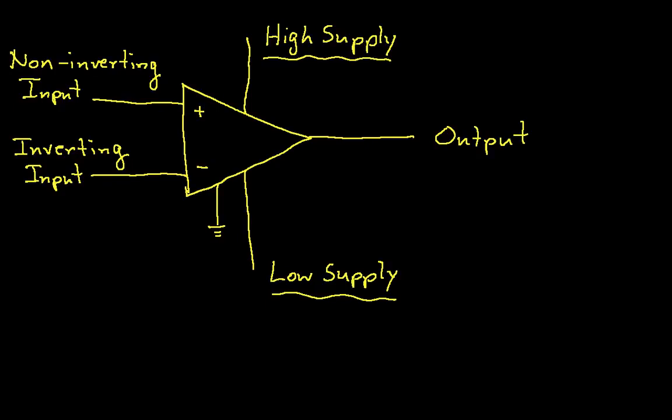We have two inputs. We have a non-inverting input and an inverting input. And these two inputs are typically connected to other bits of circuitry. And the op-amp takes the difference between the non-inverting input and the inverting input, multiplies it by a gain, and that becomes the output of the op-amp. So again, the output of the op-amp is the gain times the non-inverting voltage minus the inverting voltage.